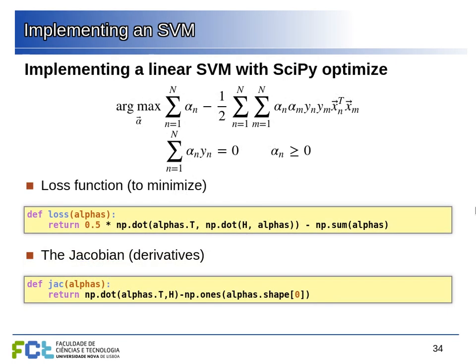We can now set this loss function. The loss function is this expression; since we are maximizing but we have a minimize function, we change the sign. We start with the inner product of all alphas and the H matrix — that's H multiplied by alphas twice using matrix multiplication — then subtract the sum of the alphas. We also need the derivatives: when solving a complex optimization problem, it's useful to give the analytical derivatives to the solver, because it's more efficient than computing them numerically. This is simply the derivative of the loss function with respect to the alphas.